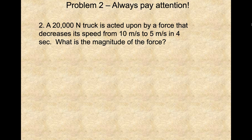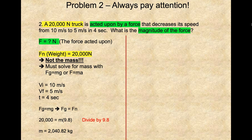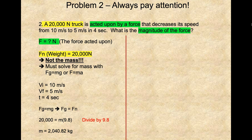Always pay attention to the details. The question asks for the magnitude of the force felt — F is our unknown in newtons. Most students make the mistake of thinking that the 20,000 newtons refers to the applied force, but it's actually the weight of the truck — FN. There's a difference: a 20,000-newton truck simply refers to the weight of the truck, not the force acted upon. You need to be able to pick up on these details and differentiate.